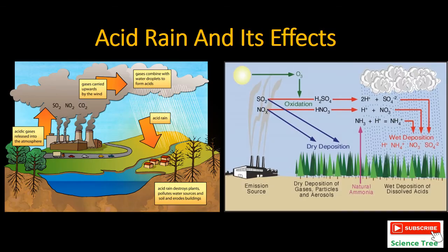Welcome to Science Tree channel. Today's topic is acid rain and its effects. This is chapter number 14, Atmosphere, from class 10. Acidic gases are the cause of acid rain.